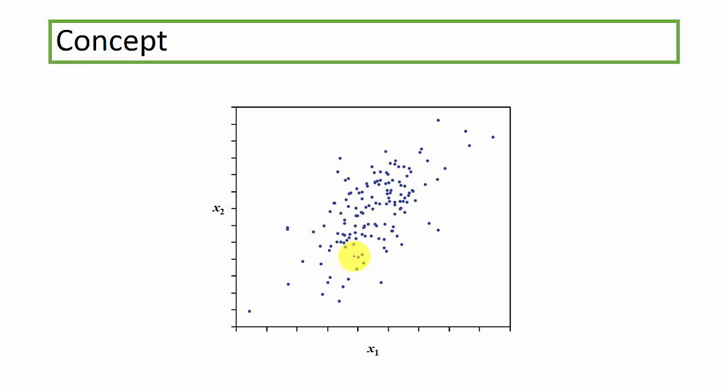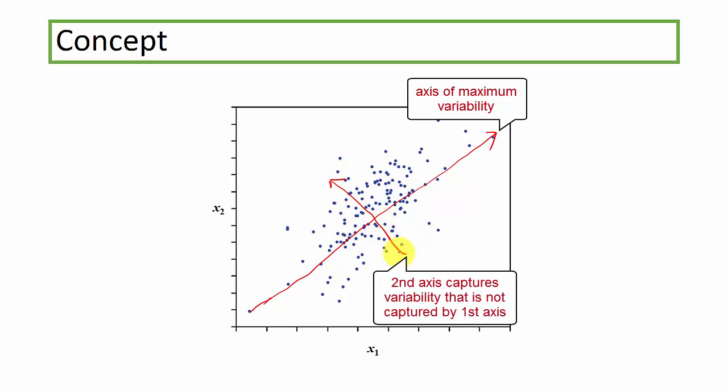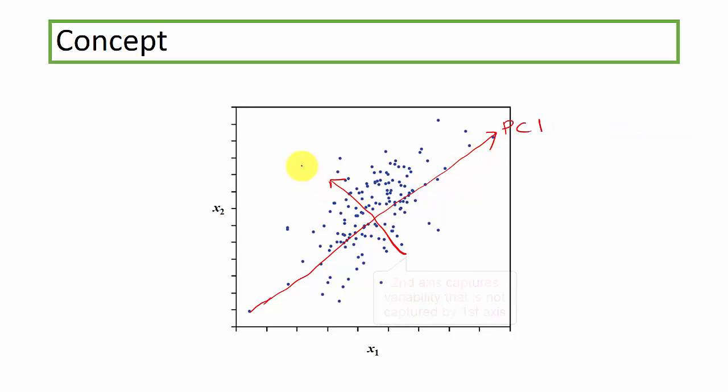Now in order to capture as much variability as we can, we need to find the axis of maximum variability. Let's take this bivariate data as an illustration. Now recall that we use eigenvalue and eigenvector analysis to find the axis of maximum variability, which in this case is along this direction. So subsequently, the second axis will be orthogonal or simply speaking perpendicular to the first axis in order to capture the variability that cannot be captured by the first axis. So this direction, which is the axis of the maximum variability, is called PC1. And this second axis, which is perpendicular to the first axis, is called PC2.